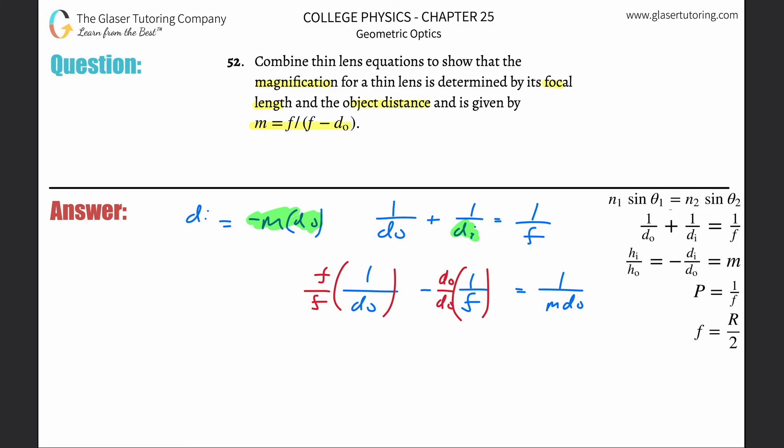So f times one is simply just f. And this becomes now divided by, you can write it as f do if you like, minus then do over f do is equal to then one over m do. And now what I'm going to do is I'm going to combine these things. So now this works out to be f minus now do all over f do is equal to one over m do.